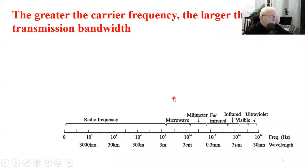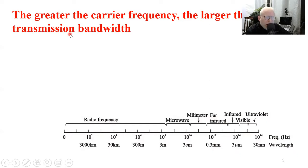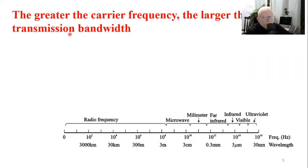What happens when we increase the carrier frequency? The impact is in the bandwidth. The bandwidth is logically a function of the carrier frequency. For example, when you have a carrier frequency equal to 1 gigahertz, it doesn't make sense to have a bandwidth equal to 1 gigahertz — that is against logic. Your bandwidth may be hundreds or tens of megas. So it is relatively a ratio between the carrier frequency and the bandwidth.